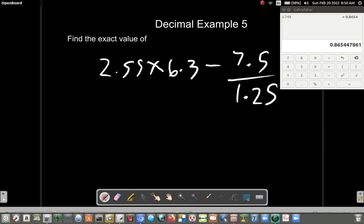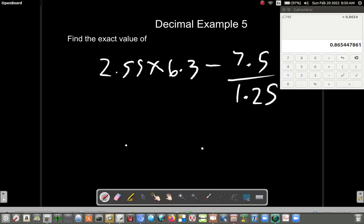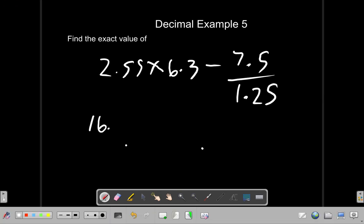2.55... Oh, we have a calculator though. We want to work with a calculator here now. 2.55 times 6.3. Right. Equals 16.065.